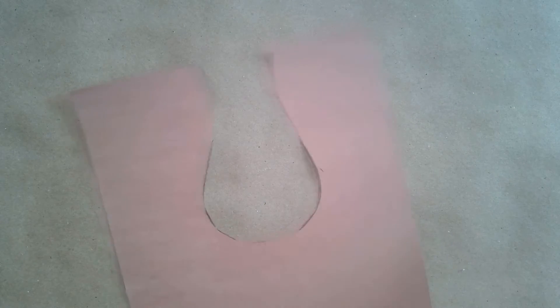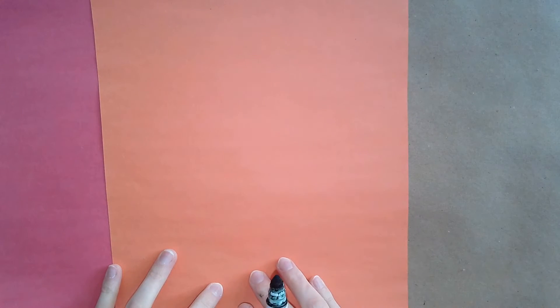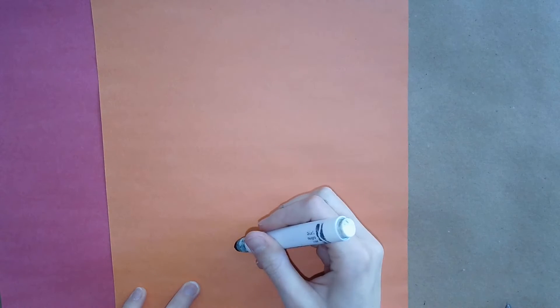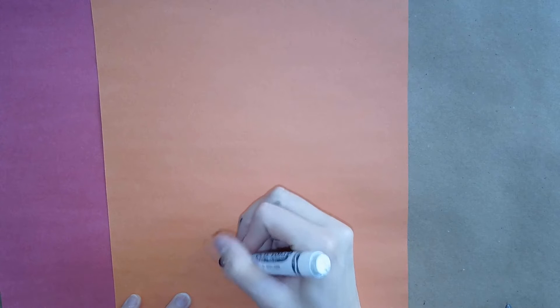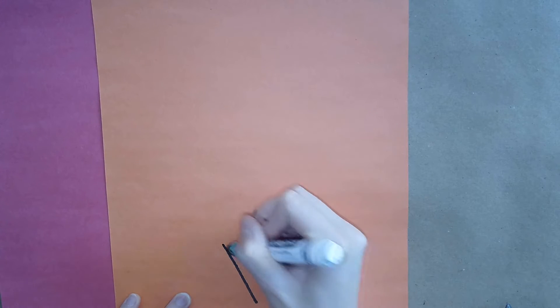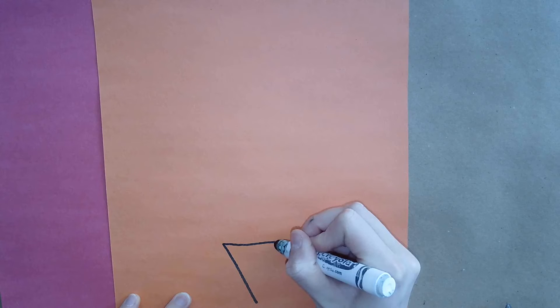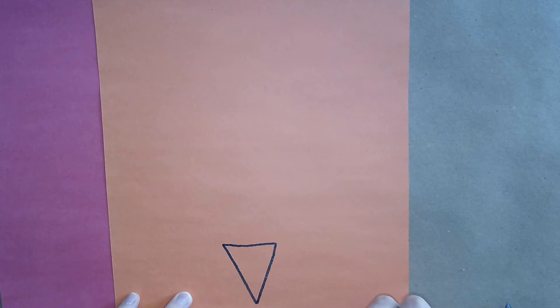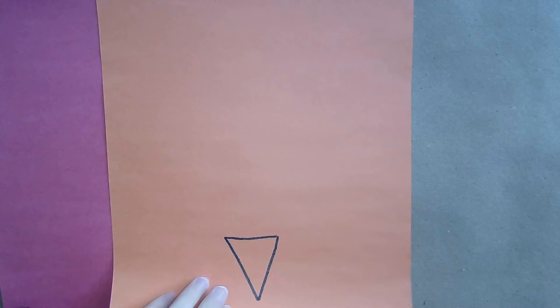And now we're going to make the beak and the gobbler for our turkey. And that's where you'll need red and orange construction paper. For the beak of your turkey, you can draw any size, shape, triangle that you like. Something like this. I think I'm happy with that. And you can cut this out.